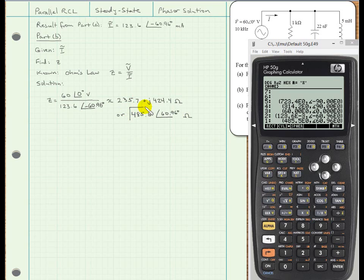And that's what we were asked to find in part b. This represents the total impedance seen by the voltage source.